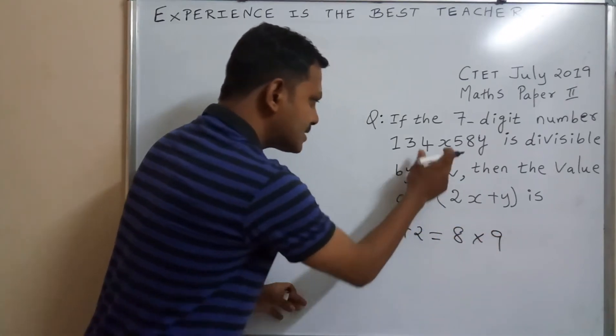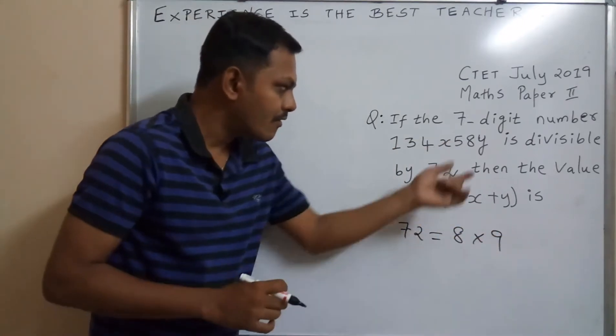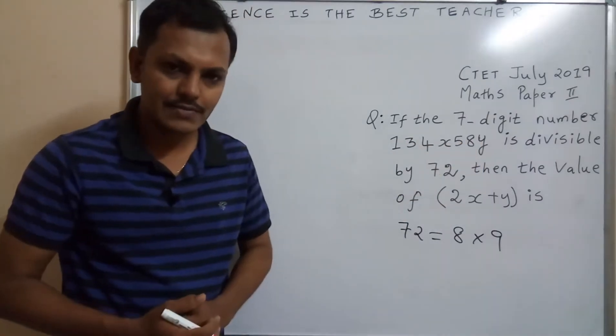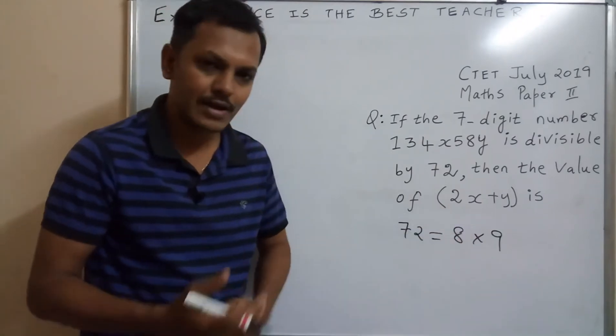We will check this number is divisible by 8 and find the y value. This number is divisible by 9, we find the x value. Then we substitute and find out the answer.